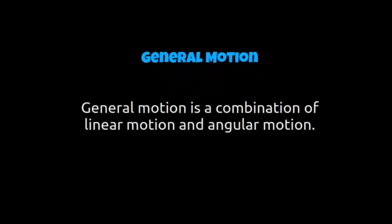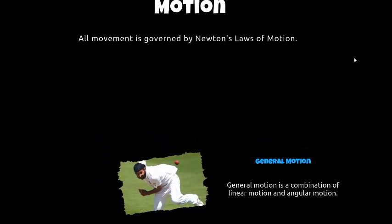The third type of motion is called general motion, and this is a combination of linear motion and angular motion — basically going straight and operating around an axis. A really good example is someone bowling in cricket: they take the run-up moving in a straight line at the same speed and distance, while at the same time their limbs are rotating around an axis. As they throw the cricket ball, the limbs rotate again and the ball itself could be spinning around an axis — a combination of both linear and angular motion.